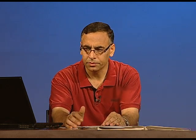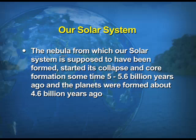Let us have a look at the formation of the solar system. The nebula from which our solar system is supposed to have formed started its collapse and co-formation sometime 5 to 5.6 billion years ago, and the planets were formed about 4.6 billion years ago.